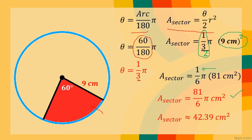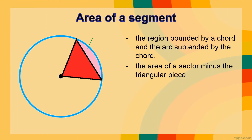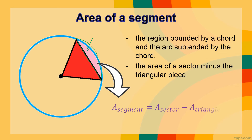Now, how about determining the area of a segment of a circle? A segment is the region bounded by a chord and the arc subtended by that chord — the pink region you see in the figure. The area of a segment = area of the sector minus the area of the triangular piece. So we simply find the sector area and subtract the triangle area.